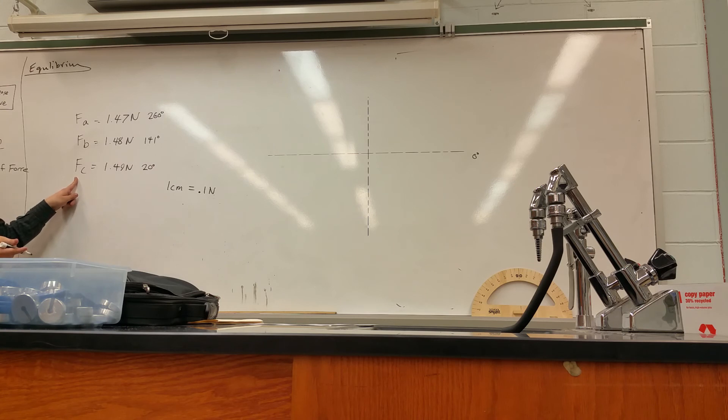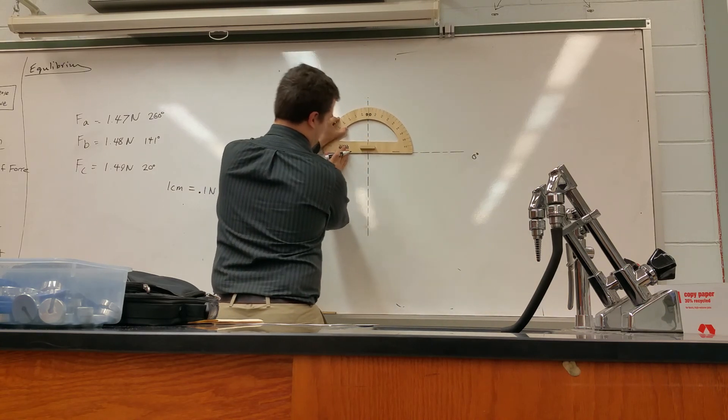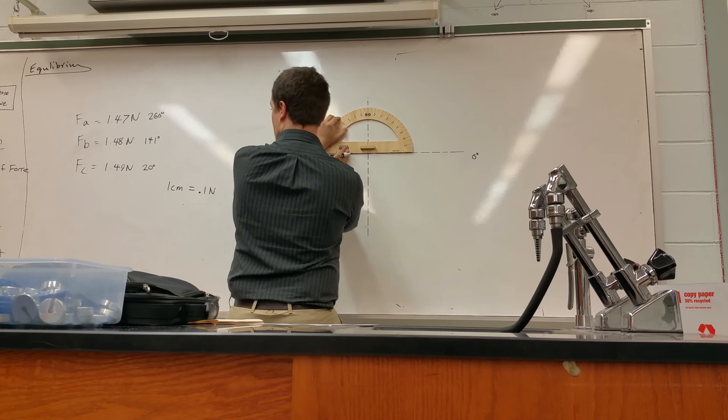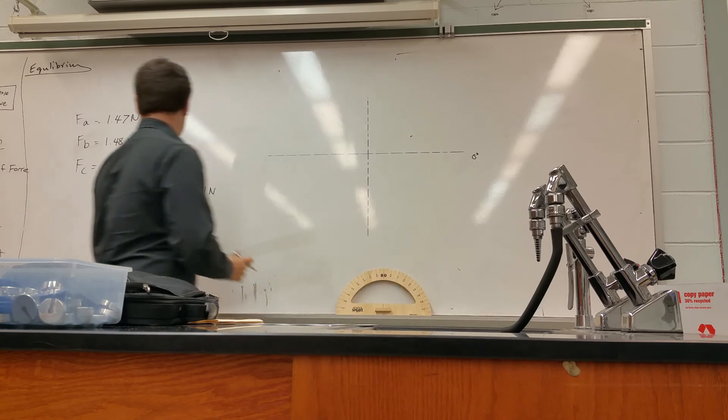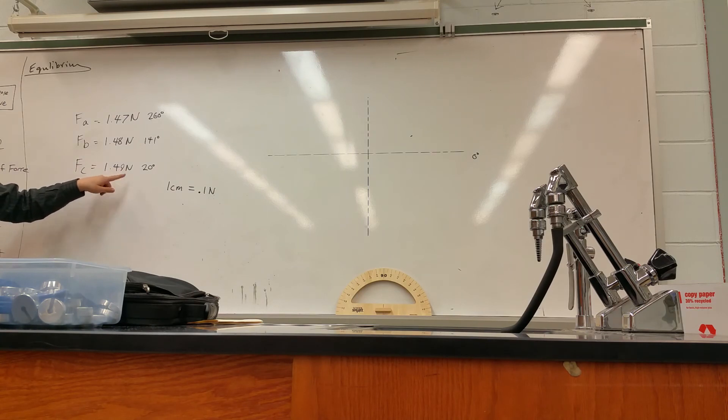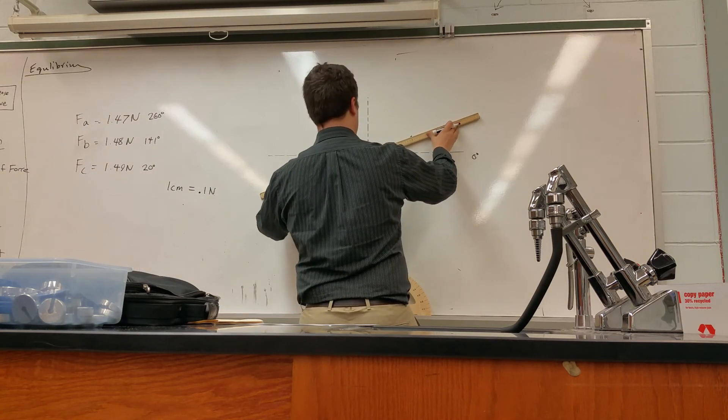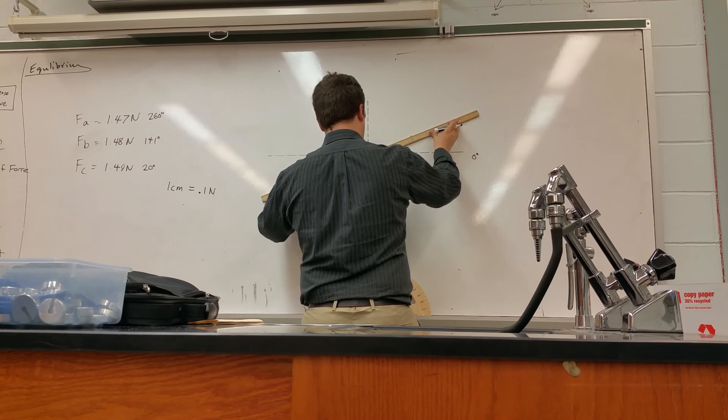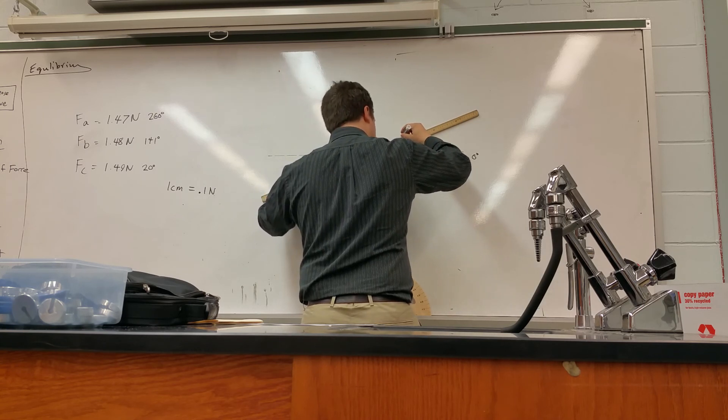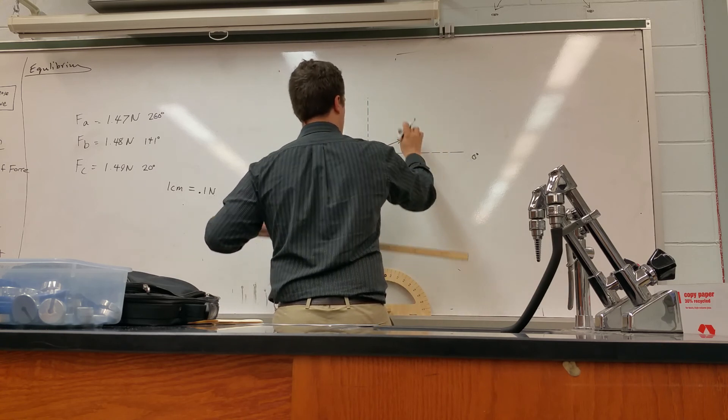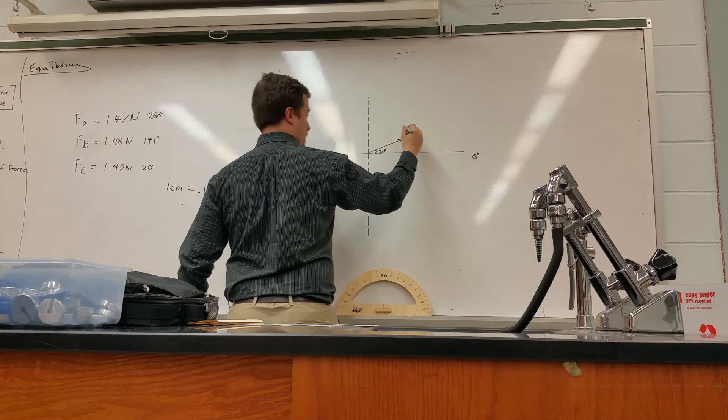I'm going to start with FC because it's closest to the zero mark and it's at 20 degrees. So I take my protractor, center it at the origin mark like that, then I mark out 20 degrees. I look at my magnitudes—1.49, so that's going to be about 15 centimeters according to my scale. So I take my ruler, meter stick, line it up with where it's got to go, and then I'm going to go over 10 and just at 15, and then I stop right there. Then I would label the angle—the angle here is 20 degrees—and then this is FC.